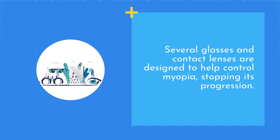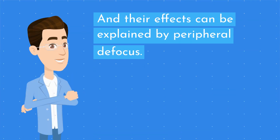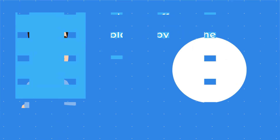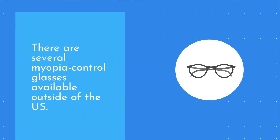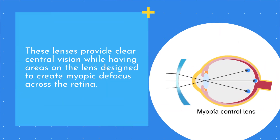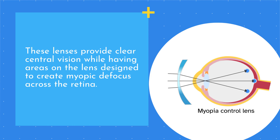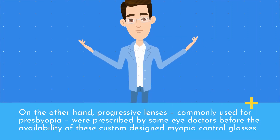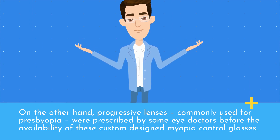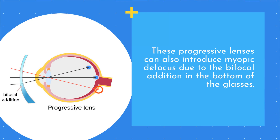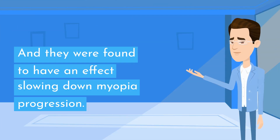Several glasses and contact lenses are designed to help control myopia, stopping its progression, and their effects can be explained by peripheral defocus. There are several myopia-controlled glasses available outside of the US. These lenses provide clear central vision while having areas on the lens designed to create myopic defocus across the retina. Progressive lenses, commonly used for presbyopia, were also prescribed by some eye doctors and can introduce myopic defocus due to the bifocal addition in the bottom of the glasses, and they were found to have an effect slowing down myopia progression.